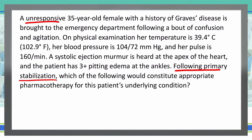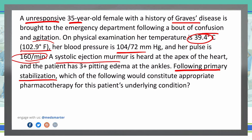So the unresponsive 35-year-old with a history of Graves' disease has had confusion and agitation. Looking at their physical findings, we have a 102.9-degree fever or 39.4 Celsius, low blood pressure, and a high tachycardic pulse. We do have a systolic ejection murmur at the apex and 3-plus pitting edema.